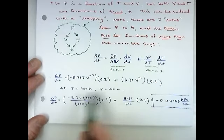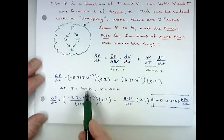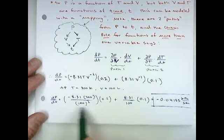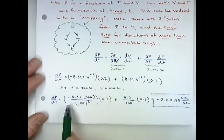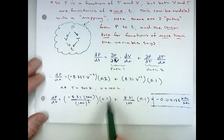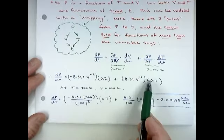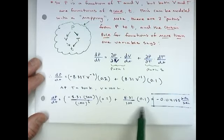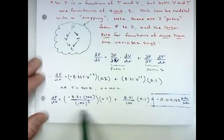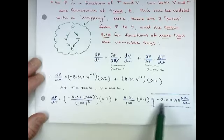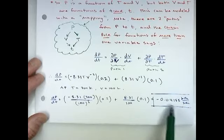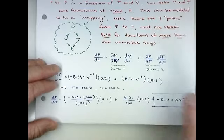Plugging in the given information — temperature 300 and volume 100 — as we suspected, the fact that the volume was increasing had a negative effect on the pressure, serving to decrease it. The temperature increase had a positive effect. It turns out the negative effect of the volume increasing was stronger, because this answer comes out to be negative 0.04155 kilopascals per second.